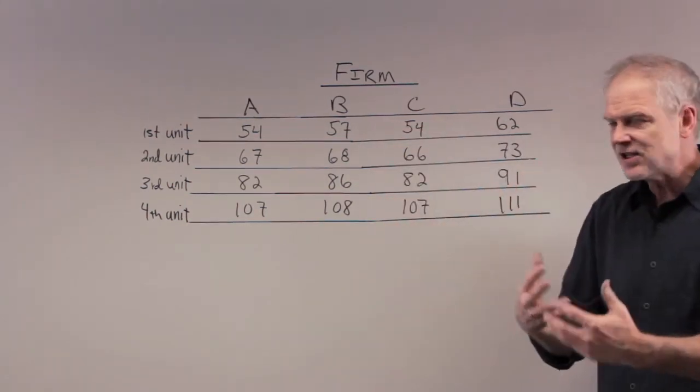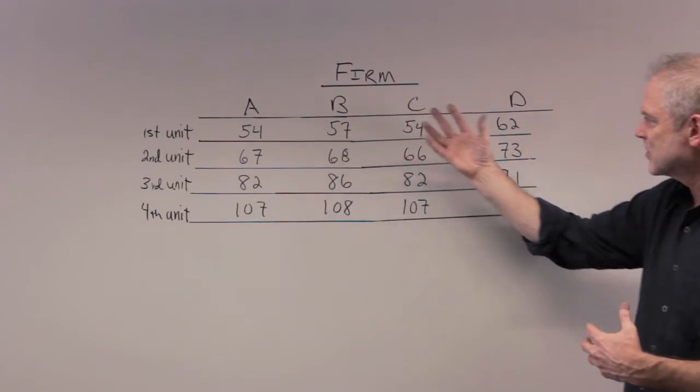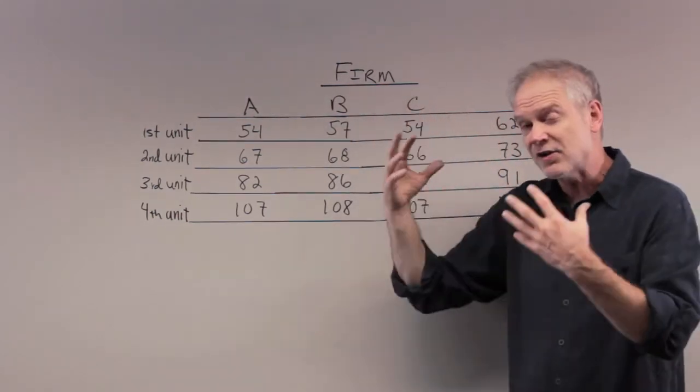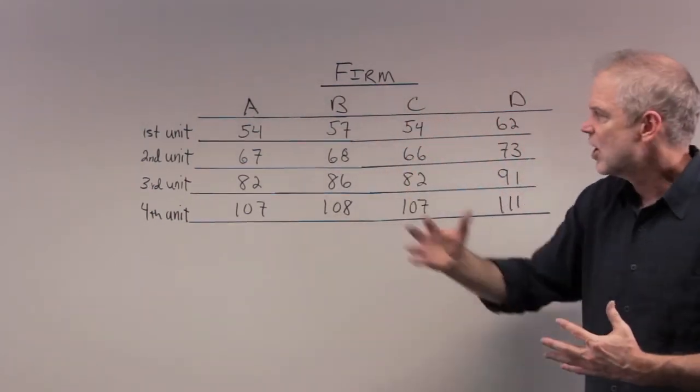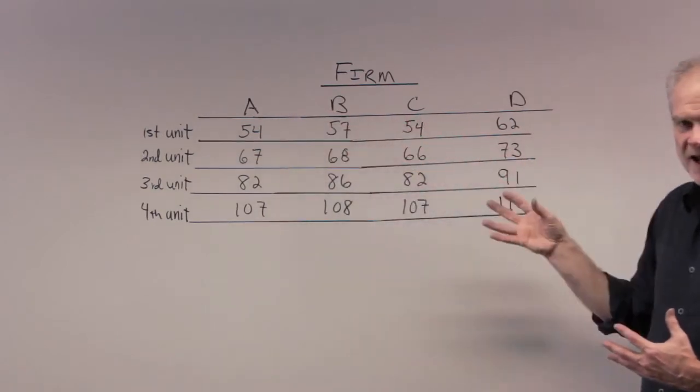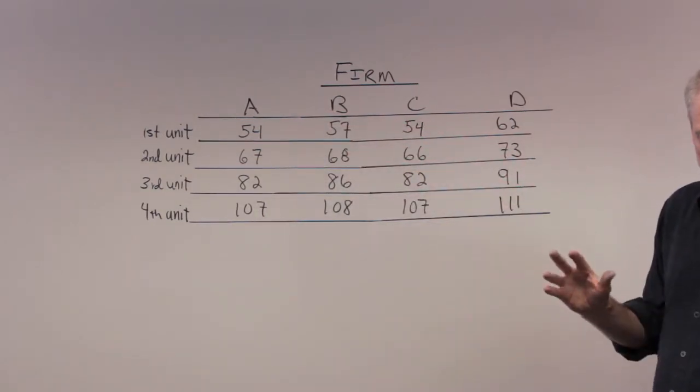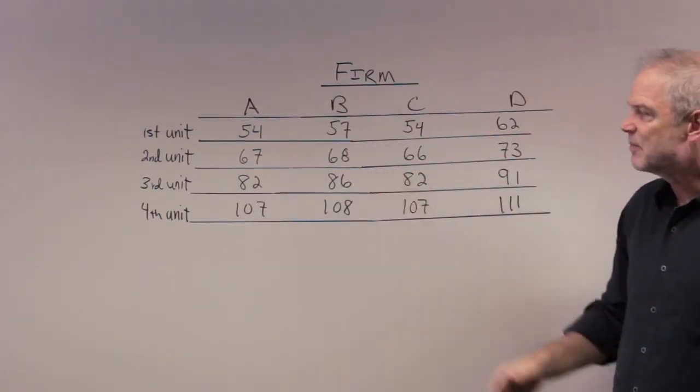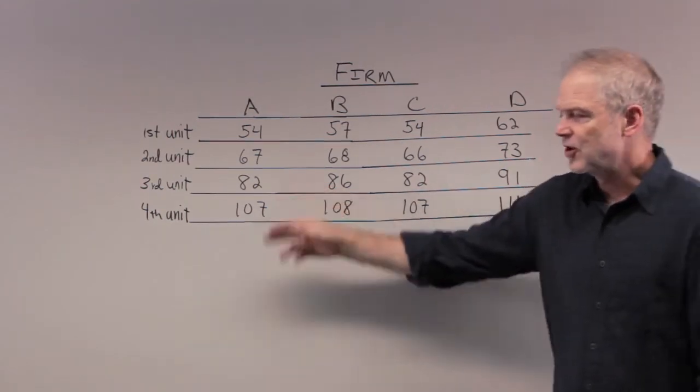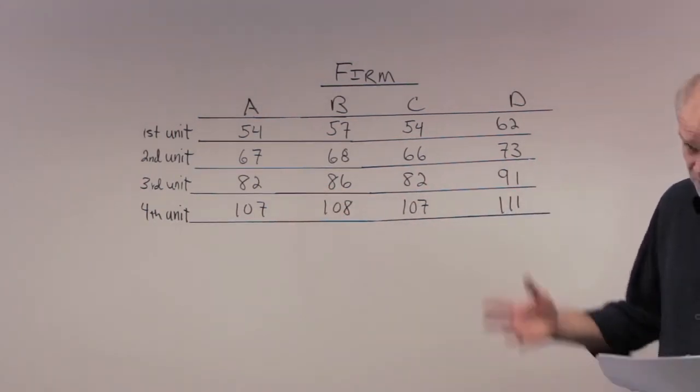So you're providing incentives, you're getting the low-cost firms, the firms for whom it's relatively cheap to get rid of the pollution. You're getting them in the business of abating pollution, which is just what you want to do. And you're setting a price saying, anything above that, then you have to pay me. Me being the government.